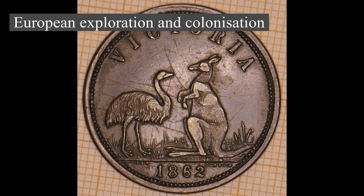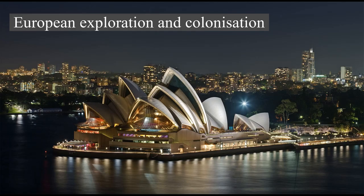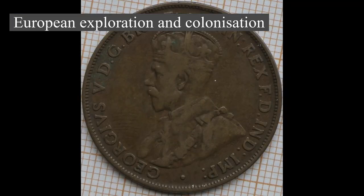The Dutch charted the whole of the western and northern coastlines and named the island continent New Holland during the 17th century, and although no attempt at settlement was made, a number of shipwrecks left men either stranded or, as in the case of the Batavia in 1629, marooned for mutiny and murder, thus becoming the first Europeans to permanently inhabit the continent. In 1770, Captain James Cook sailed along and mapped the east coast, which he named New South Wales and claimed for Great Britain.